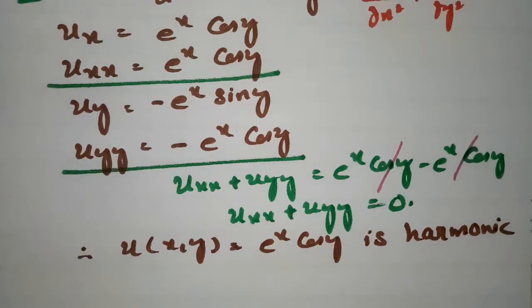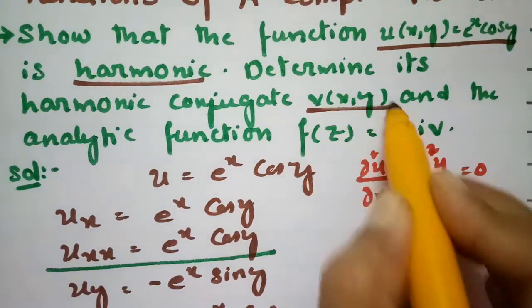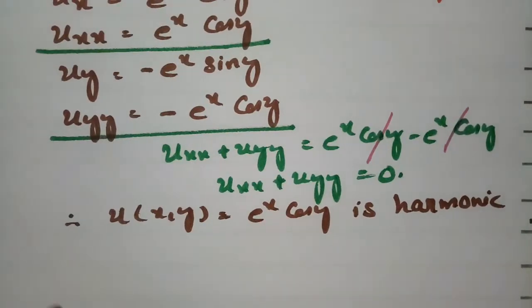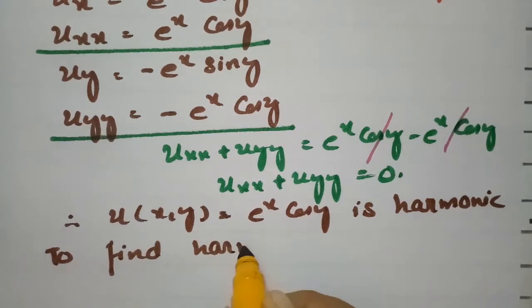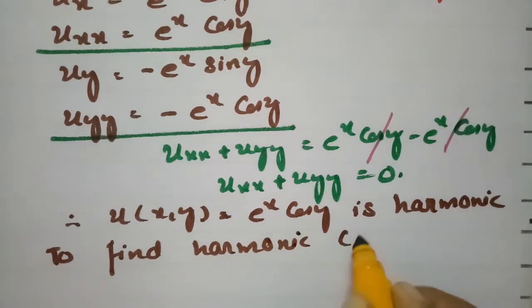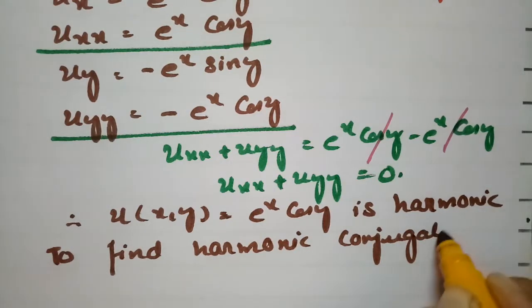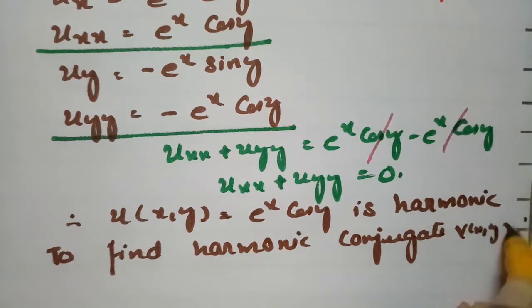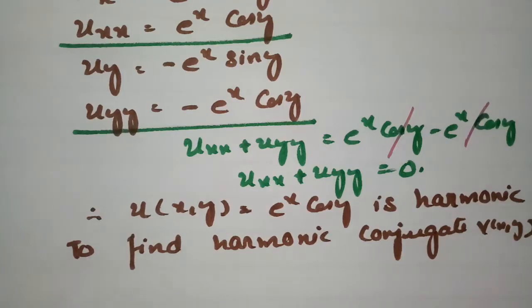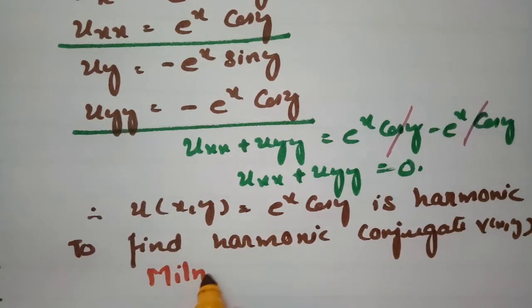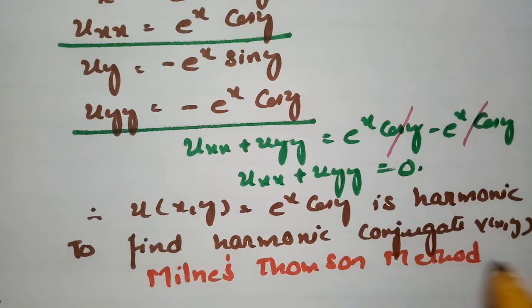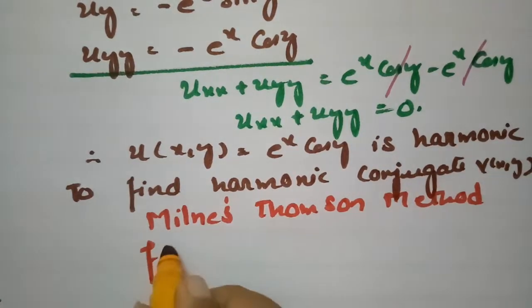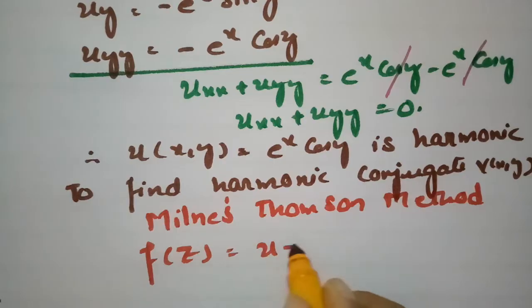Now I am going to find the harmonic conjugate v(x, y). To find the harmonic conjugate, I am going to use the Milne-Thomson method. According to the Milne-Thomson method, f(z) = u + iv, and we make a derivative with respect to x.